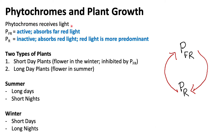Phytochromes are pigment molecules found within plants that are responsible for plant growth, seed germination, and when a plant will produce flowers. They are essentially blue-green pigment molecules that receive light, and we have two different types: far red and red.